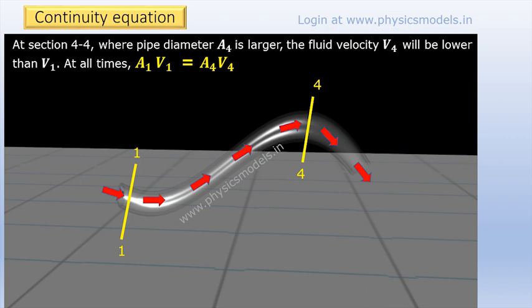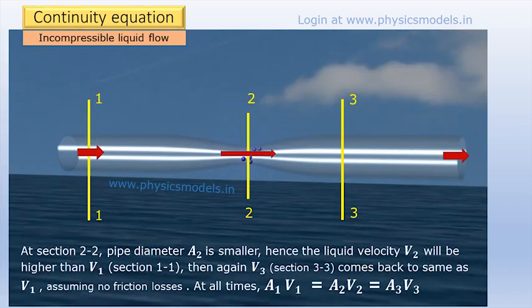Coming back to our bent pipe: the area of cross section at section 4-4 is higher — it's fatter. So if we write A1·V1 = A4·V4, since A4 is larger, the velocity V4 at that cross section will be lower, so the fluid will flow slower there. Coming back to our glass pipe, we take three sections at 1, 2, and 3. At section 2 is the narrow throat, so A2 is very small, therefore the velocity V2 will be high — the fluid speeds up through section 2. A·V being constant, the velocity of the fluid adjusts itself according to the area it encounters.